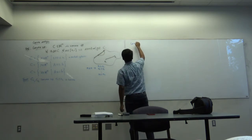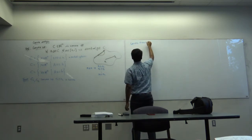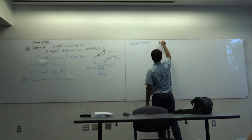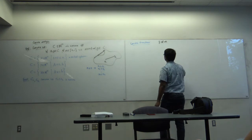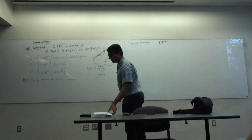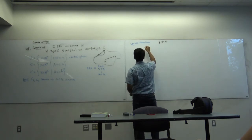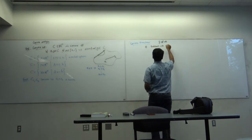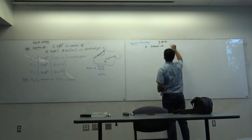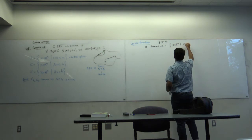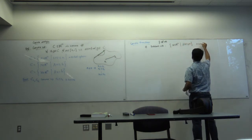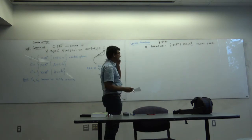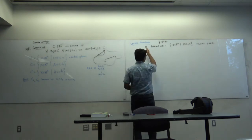Next: convex functions. I consider a function f from Rn to R. There are four equivalent definitions of convexity. The zeroth definition: the sub-level sets {x ∈ Rn : f(x) ≤ a} are convex for all a in R.